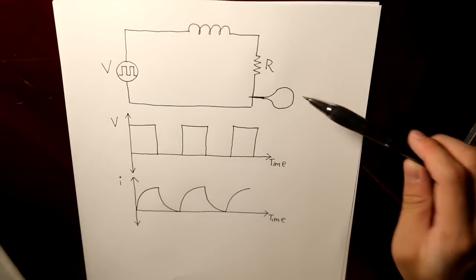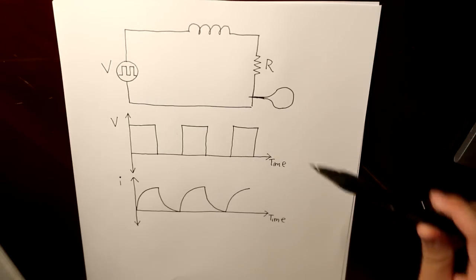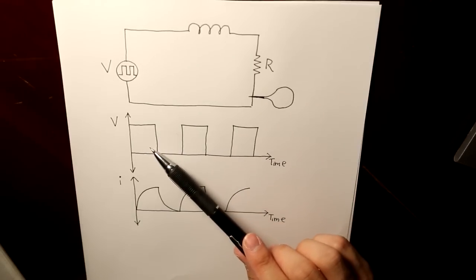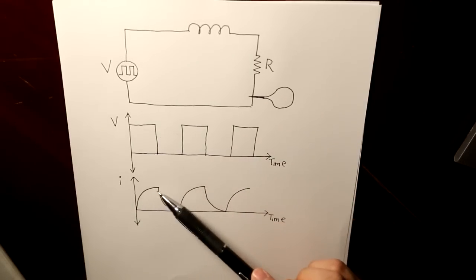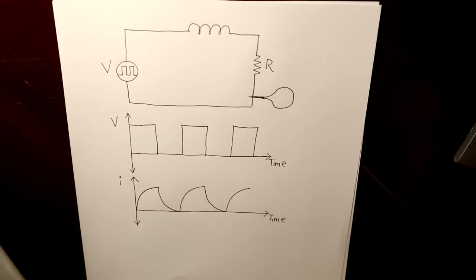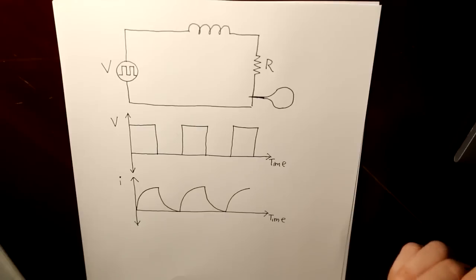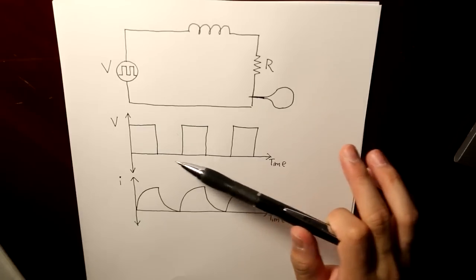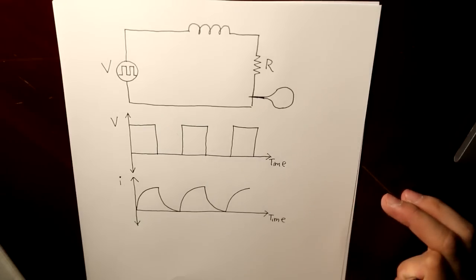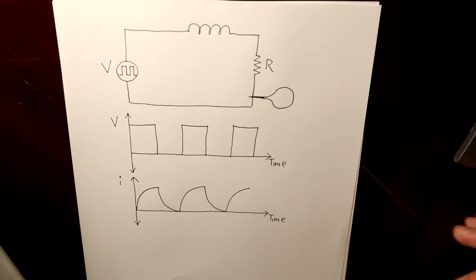Now, the next question is, how is the light bulb going to behave? The light bulb is not going to turn on instantaneously. It's going to follow how the current is behaving. So it's not going to instantaneously brighten up, but it's going to gradually brighten up. And then at the point when the voltage is zero again, it gradually dims back to its default state and then repeats over and over again.